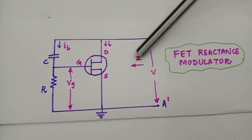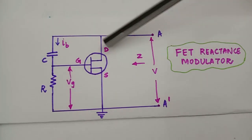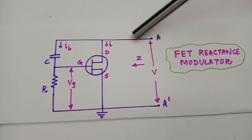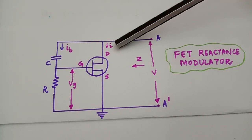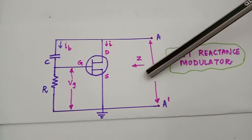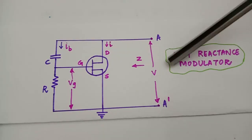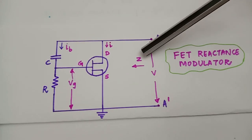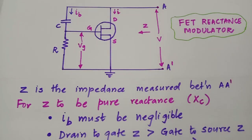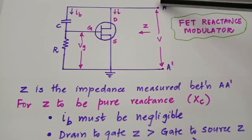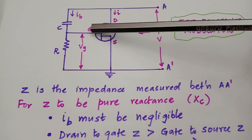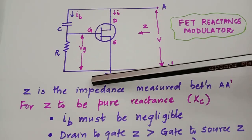This is a circuit of a FET reactance modulator. This is a bias circuit with a capacitor and a resistor. The drain current is shown by I, IB is the bias current, and the voltage between gate and source is shown as VG. We apply a voltage V across the terminals AA' and Z is the impedance seen across AA'. For the impedance Z seen at AA' to be a pure reactance, the components placed in the circuit must follow certain conditions.